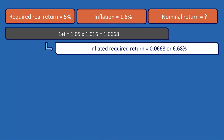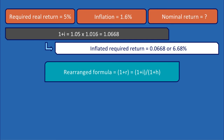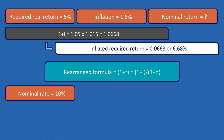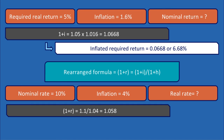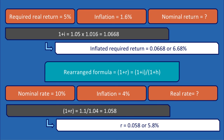Conversely, by rearranging the formula, 1 plus R equals 1 plus I divided by 1 plus H. So if the nominal rate of return is 10% and inflation is 4%, the real rate of return can be calculated as 1 plus R equals 1.1 divided by 1.04, which equals approximately 1.058. So R equals 0.058 or 5.8%.